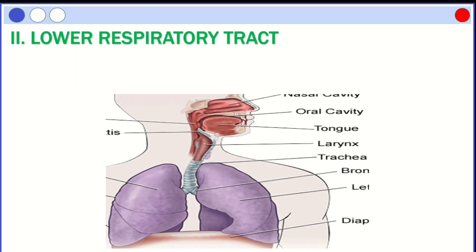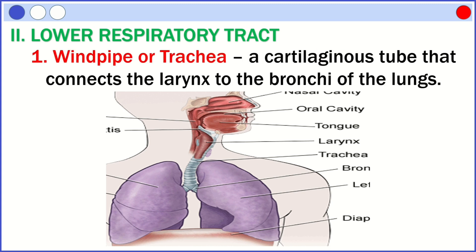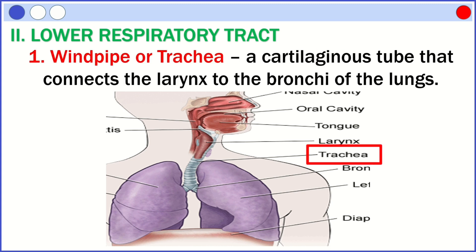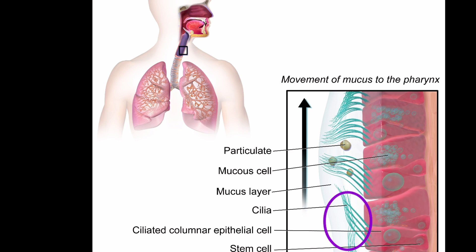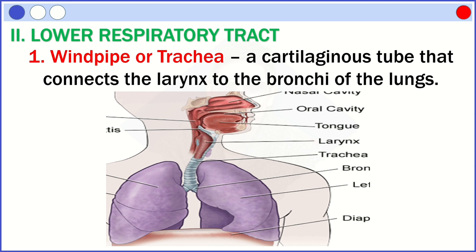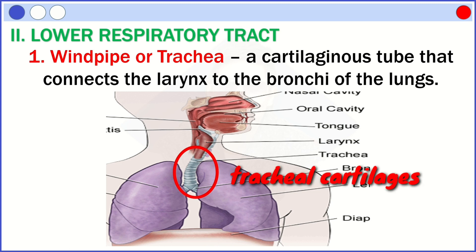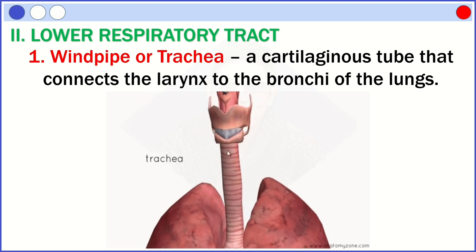We're done with the upper respiratory tract. Now, let's move on to the lower respiratory tract. The windpipe or trachea is a cartilaginous tube that connects the larynx to the bronchi of the lungs. The trachea is lined with a moist mucous membrane composed of cells containing small hair-like projections called cilia. There are also tracheal rings, also known as tracheal cartilages, which help support the trachea while still allowing it to move and flex during breathing.